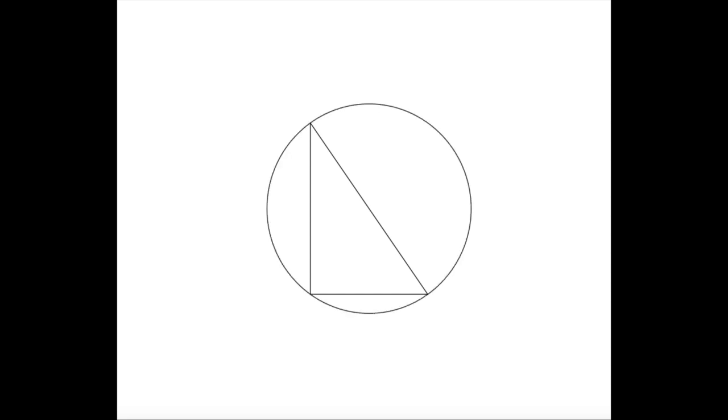Next, add semicircles whose diameters are the legs of the triangle. These crescent shapes are the Lunes. The question is, what is the sum of the area of these two Lunes?